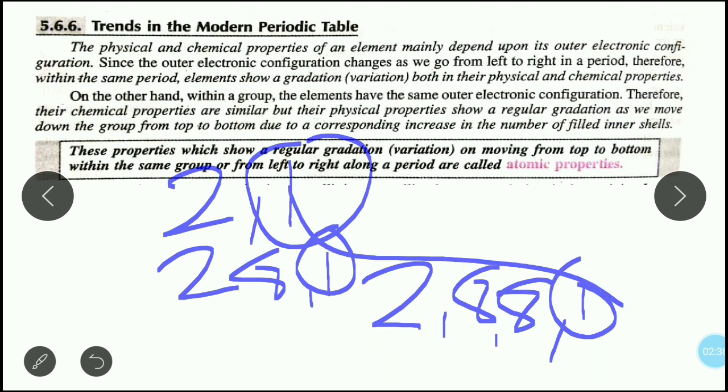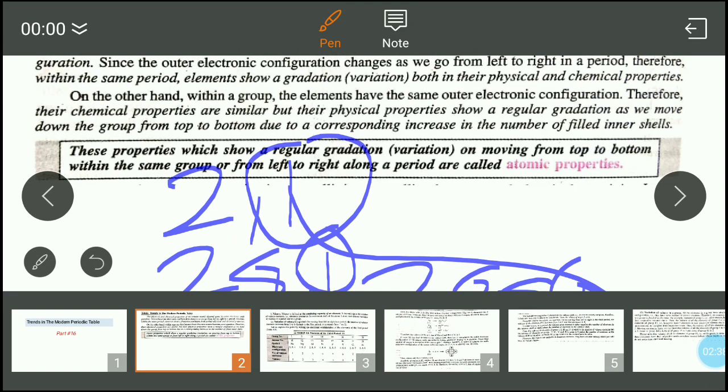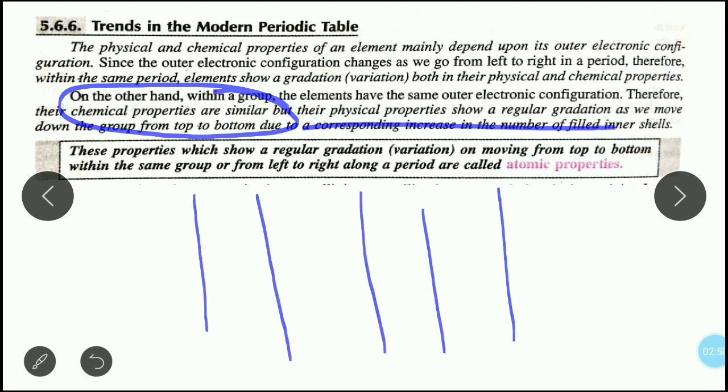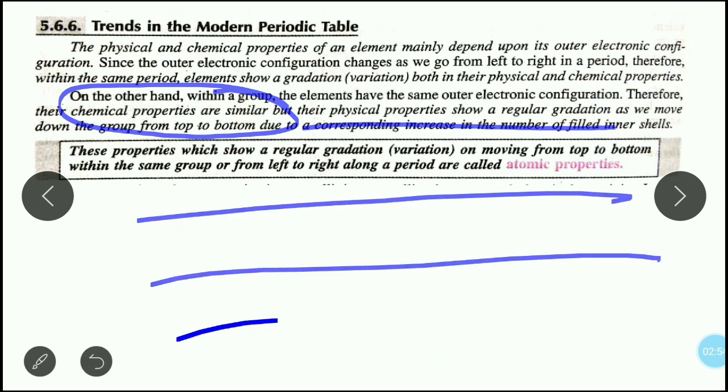The chemical properties are similar when you go down the group. But when you go in periods from left to right, there are both variations - physical and chemical.